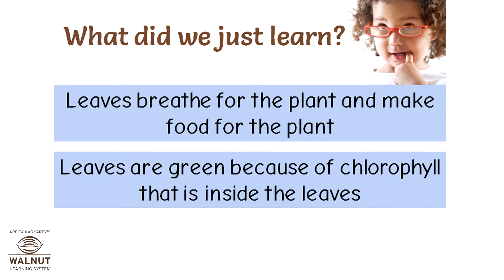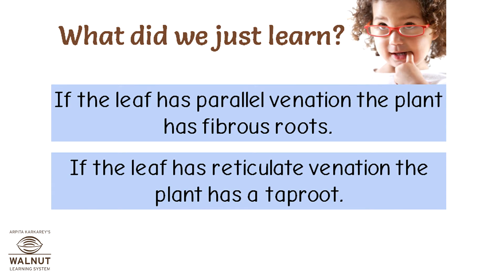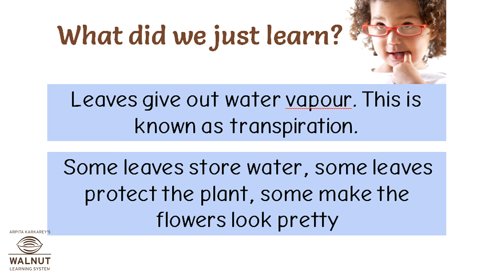The leaves are green because of chlorophyll inside them. The leaves make food in sunlight — this is known as photosynthesis, and plants give out oxygen during photosynthesis. The food is stored as starch. The leaves give out water vapor — this is known as transpiration. Some leaves store water, some leaves protect the plant, and some make the flowers look pretty.